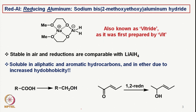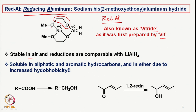There is another reducing agent comparable with lithium aluminium hydride, but in some sense better, called Red-Al, which stands for reducing aluminium. It is sodium bis(2-methoxyethoxy)aluminium hydride — the methoxy ethoxy part and an aluminium hydride — and it exists as bis(2-methoxyethoxy)aluminium hydride. It is also called Vitride, named after its discoverer Vit.